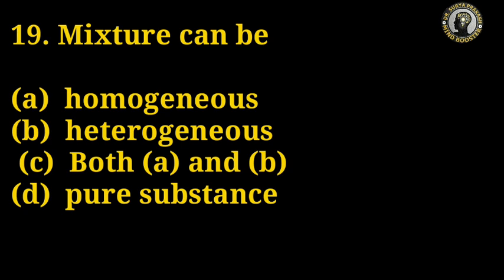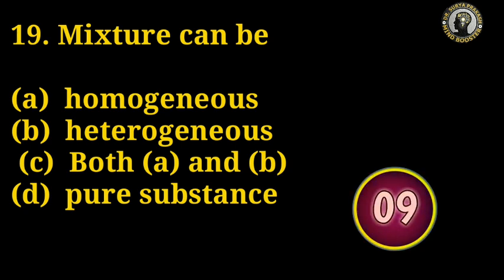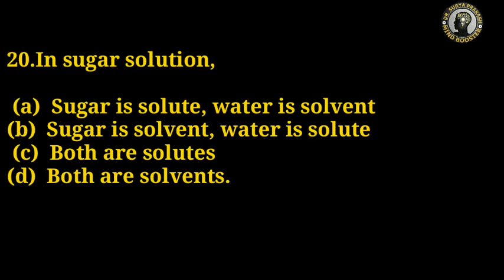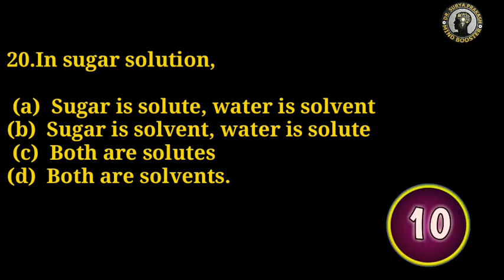Question number 19: A mixture can be which of the following? Options: homogeneous, heterogeneous, both A and B, pure substance. The right answer is C — both A and B.